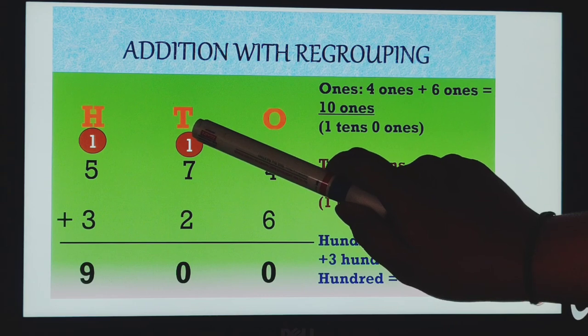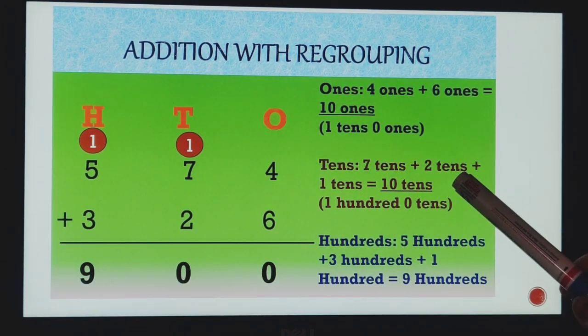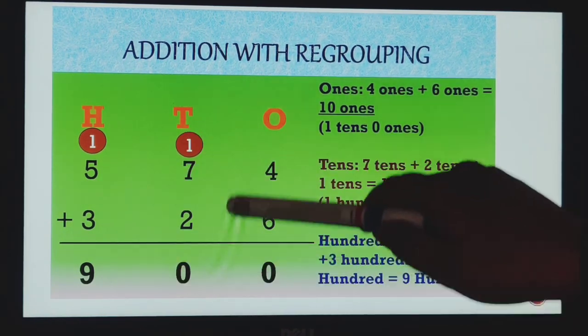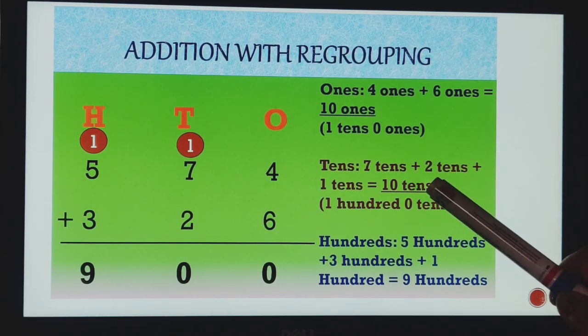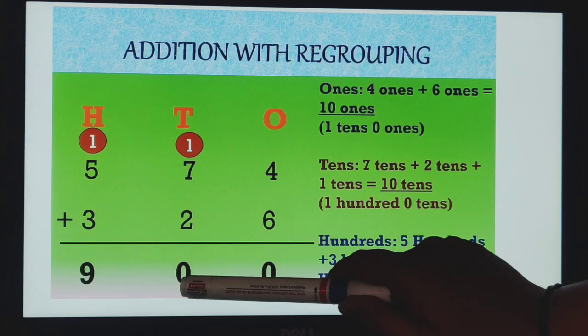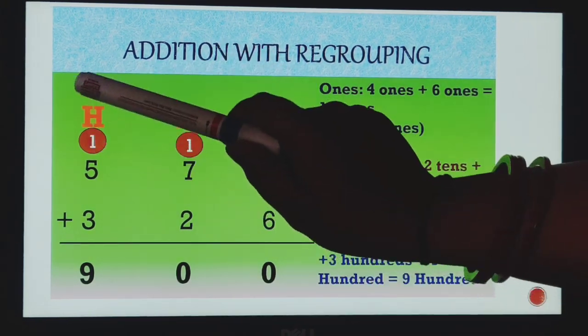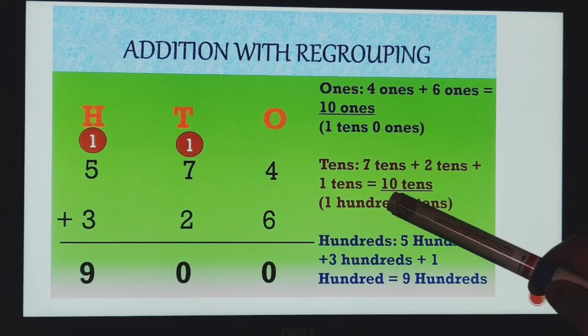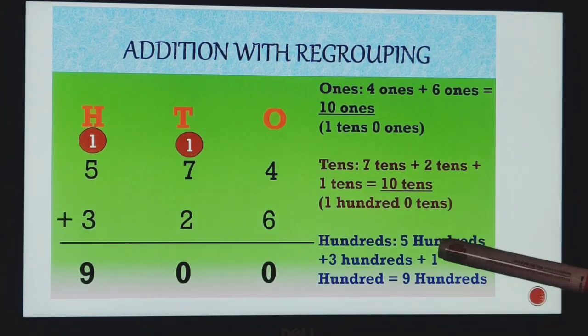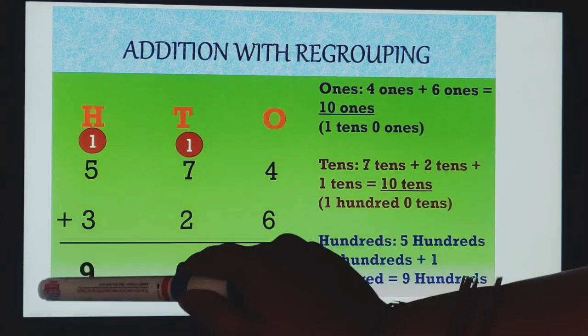Now next, we will do the addition of tens place. That is 7 tens plus 2 tens plus this 1 ten. We will do addition with this 10, and we will get the answer 10 tens. Hence, again this 0 we put over here and 1 will carry forward to the hundreds place. So it will become 500 plus 300 plus this 100. What answer we will get? We will get 900.